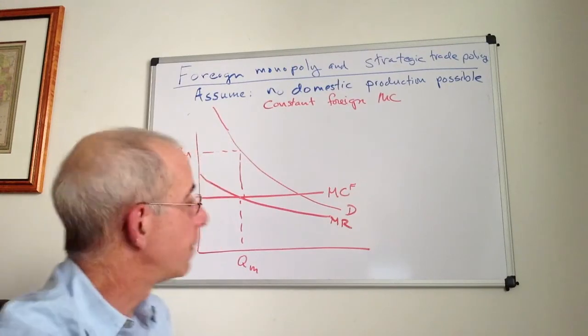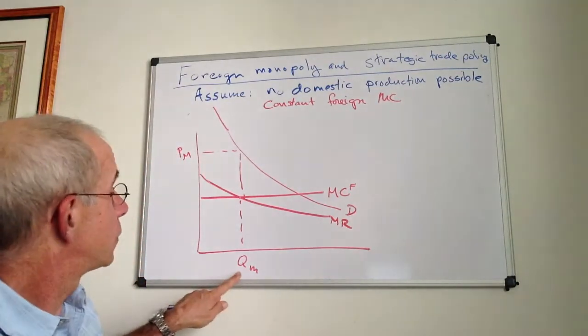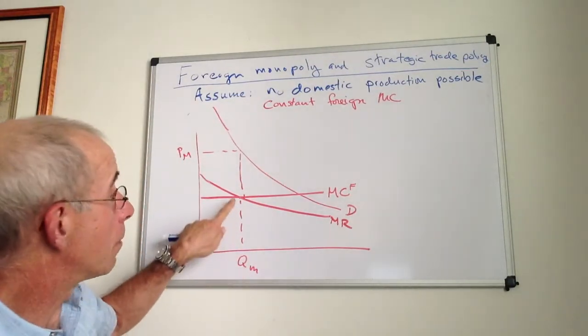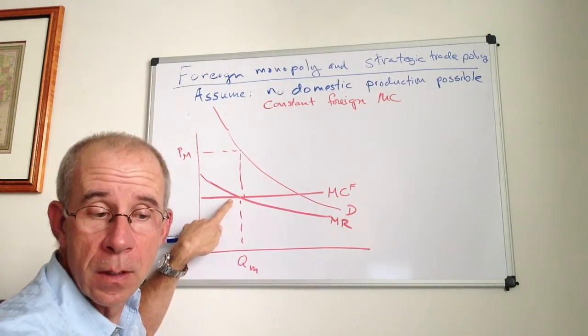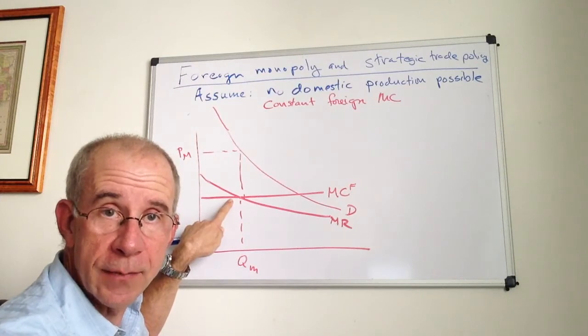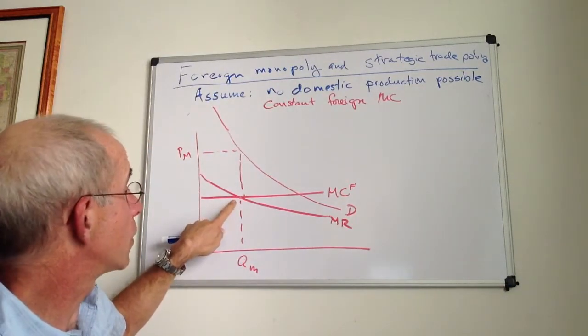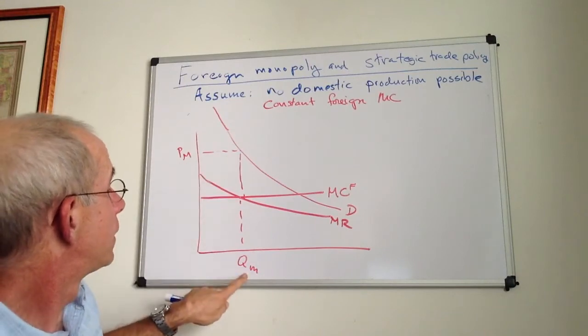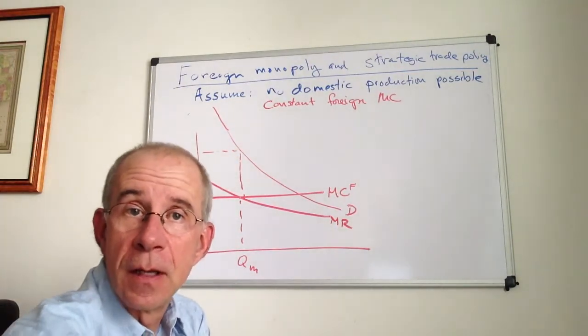The foreign monopolist takes advantage of its position to choose where marginal cost equals marginal revenue. For simplified analysis we have constant marginal cost. They pick where marginal cost equals marginal revenue, this quantity QM, and charge PM in this domestic market.